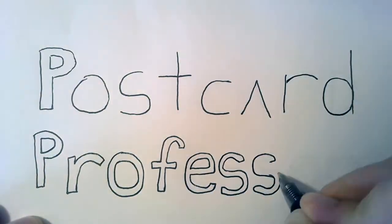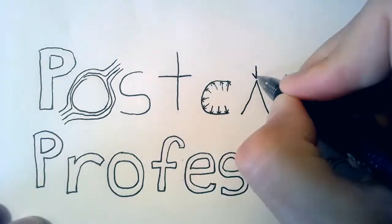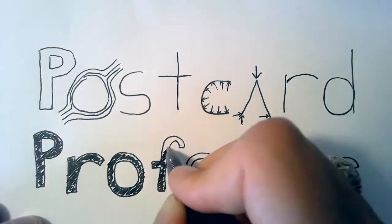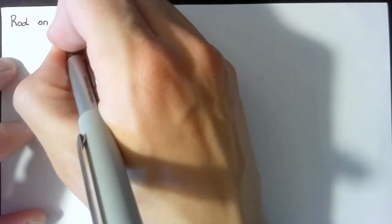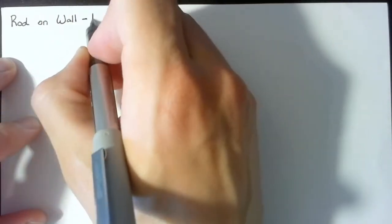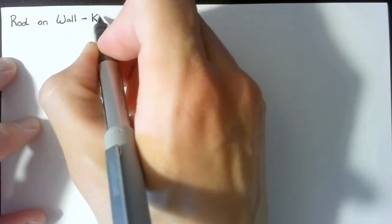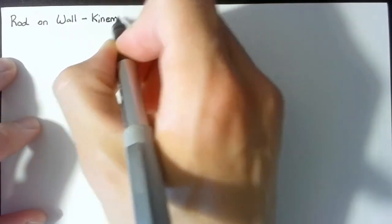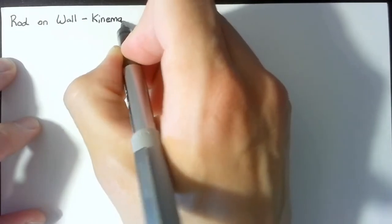Hello and welcome to The Postcard Professor, where we take complex ideas and explain them in the space of a postcard. This is going to be the first of two videos covering an example of a rod leaning on a wall. In this video we're going to be looking at the kinematics and deriving some equations that we need to solve the kinetics part of it.